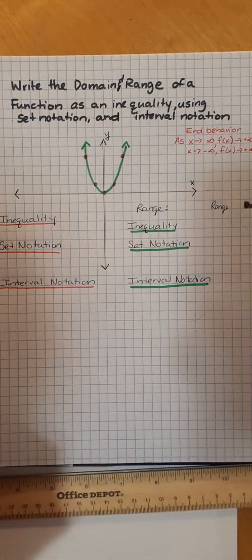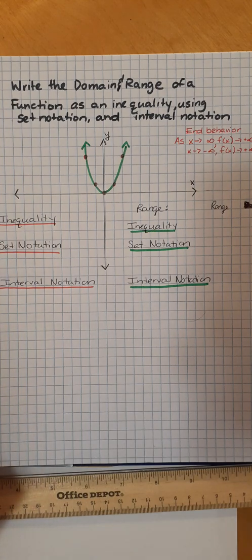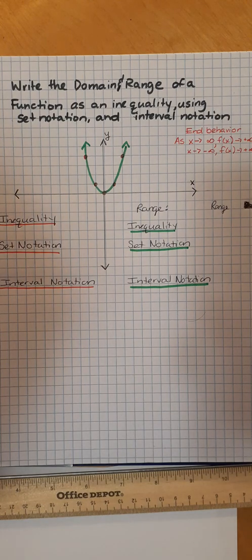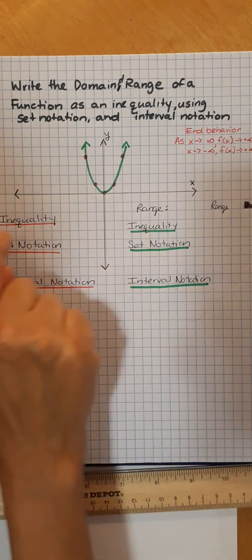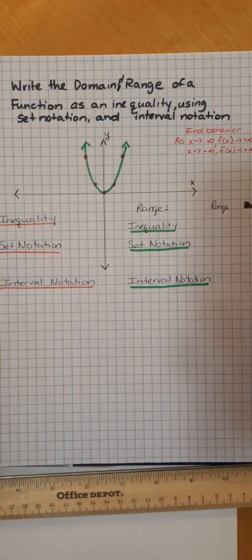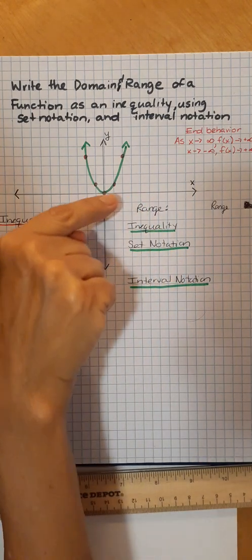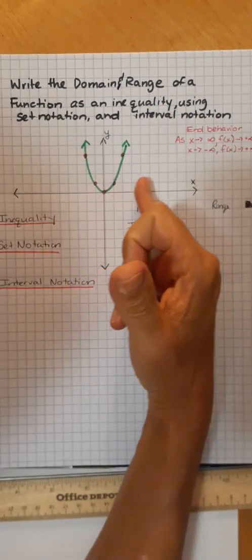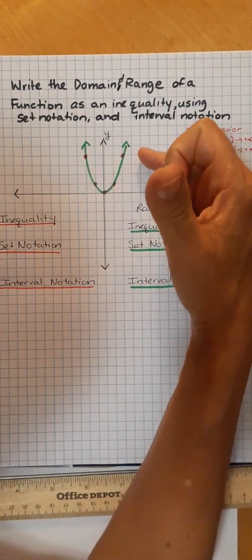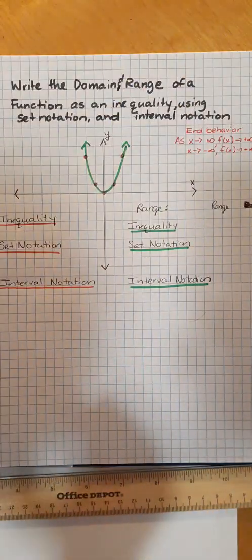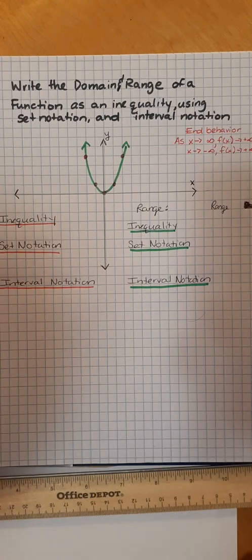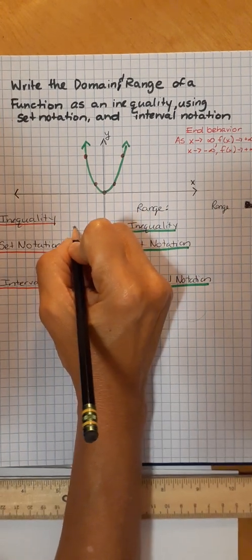Let's start with the inequality. The first thing we're going to do is check out the x's, which will be the domain. Now writing the domain as an inequality — what are my x's looking like? As my x's go in this direction, they don't stop. See the graph goes up, but the x's are moving in this direction. And because the arrow's there, it goes up and up to positive infinity, which because it's the positive side, we call it positive infinity.